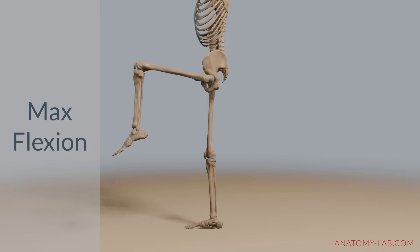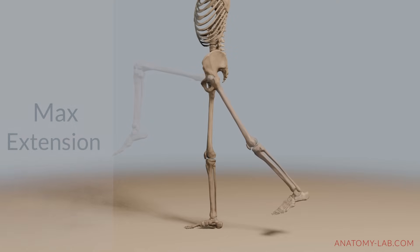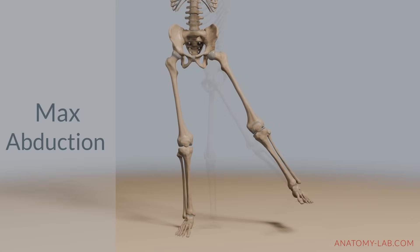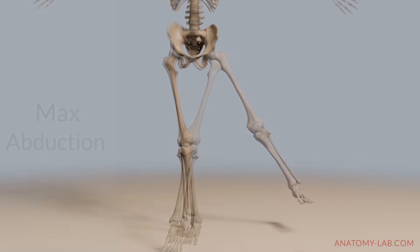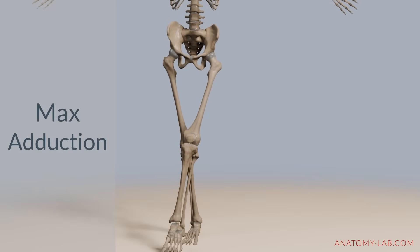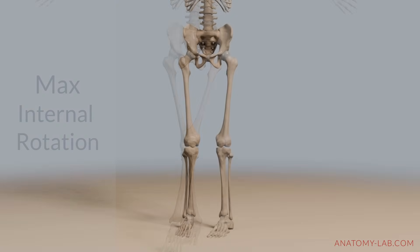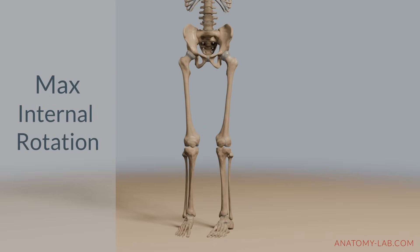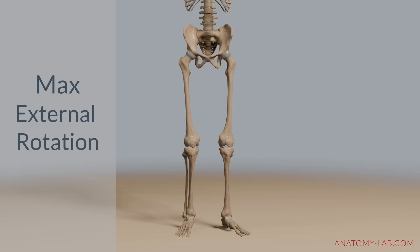Flexion is how far you can bring your thigh towards your torso. Extension is how far you can move your leg backwards away from your body. Abduction measures the maximum distance you can lift your leg away from the body's midline. Adduction indicates how far you can bring your thigh back towards or even across the body's midline. Internal rotation is the maximum angle at which you can rotate your femur inward, and external rotation is the maximum angle at which you can rotate your femur outwards.